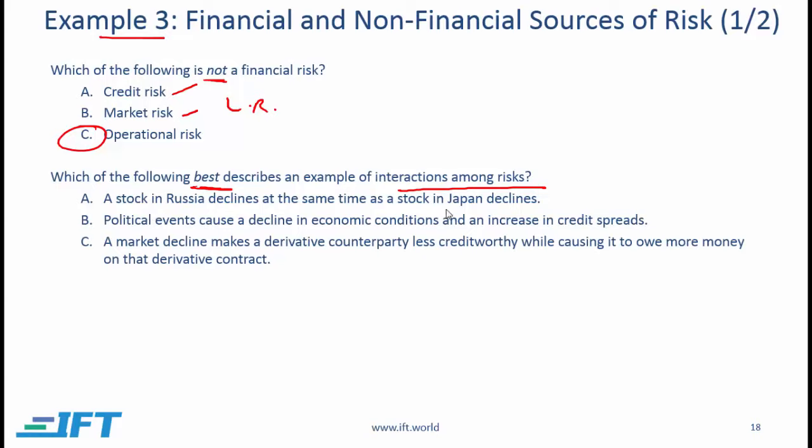Which of the following best describes a financial risk? Option A: the risk of an increase in interest rates — this is a financial risk since we discussed changes in rates (interest rates, exchange rates) and changes in prices (stock prices, commodity prices). Option B: the risk that regulators make a transaction illegal — this falls under regulatory or compliance risk, not financial risk. Option C: the risk of an individual trading without limits or controls — this falls under operational risk. The best answer is A.